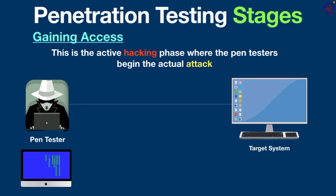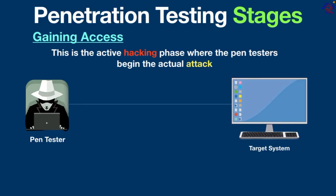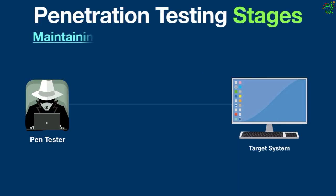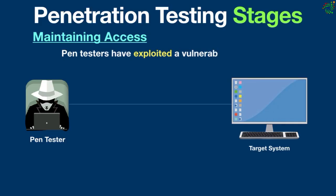The third stage is gaining access. This is the active hacking phase where pen testers begin the actual attack once vulnerabilities are identified in the scanning phase. This stage focuses on exploiting those vulnerabilities to gain unauthorized access to the target system. Common techniques include SQL injection, cross-site scripting, and DoS attacks to gain control over the system. This step shows the potential impact of a real attack.